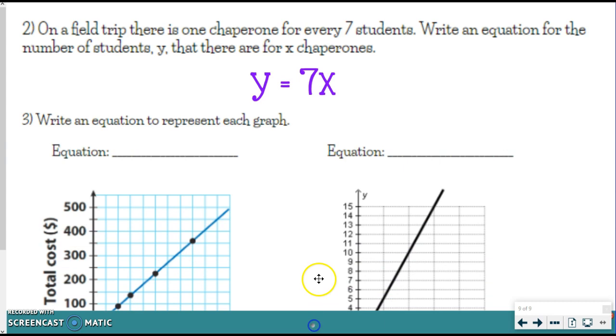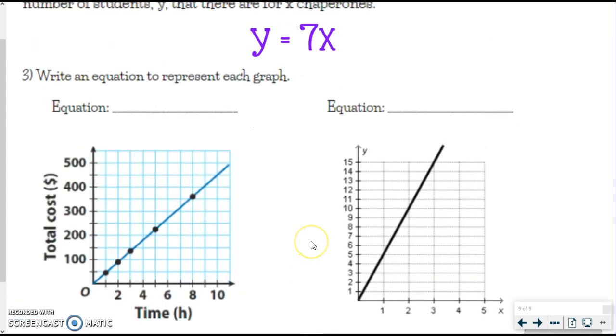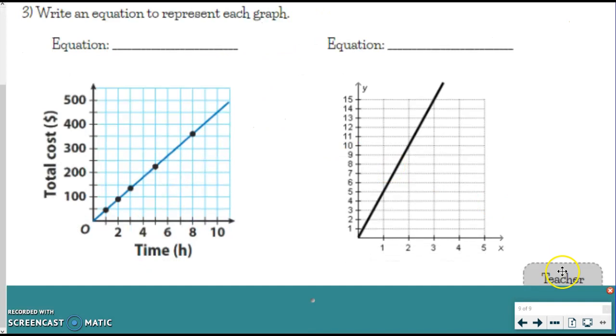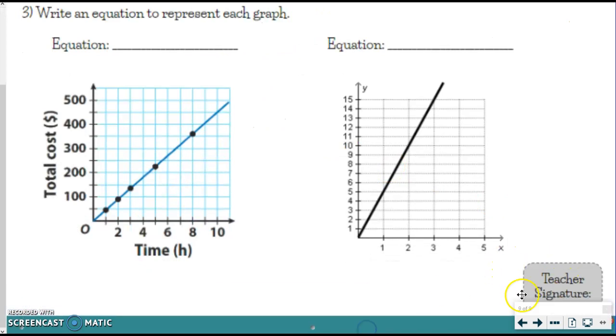So you've got two more to try. They both happen to be graphs. Use the trick from the video to help to write your equations. They need to get a teacher signature for that, and then you're on to level 1 formative. You've got this. Keep it rolling.